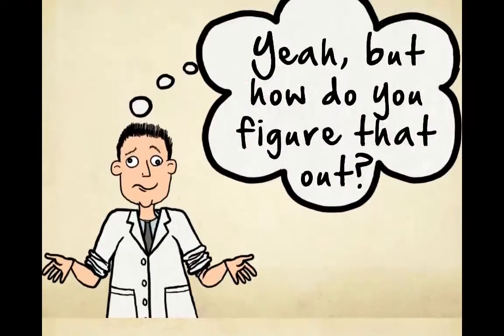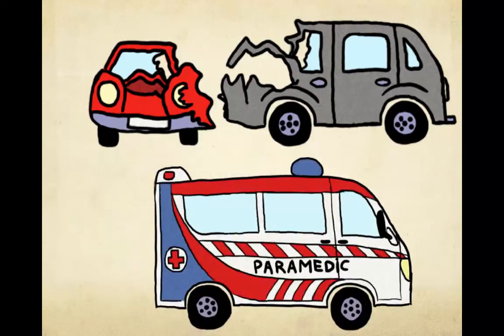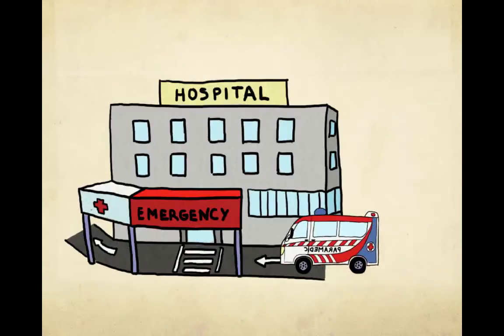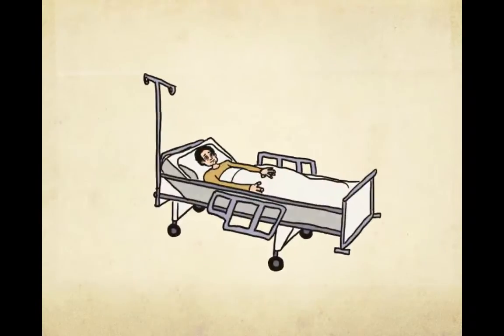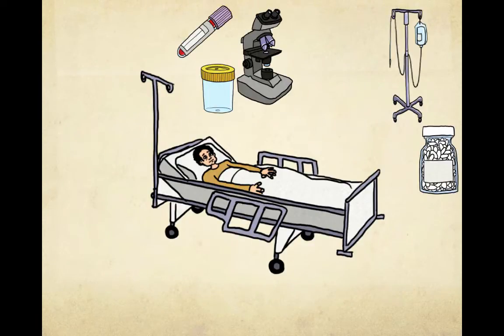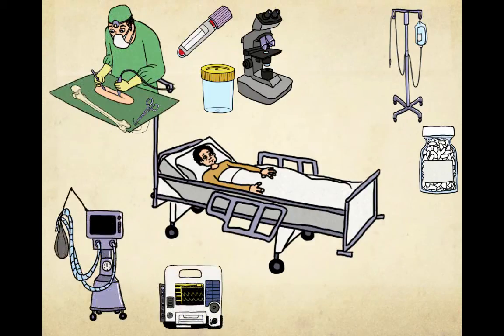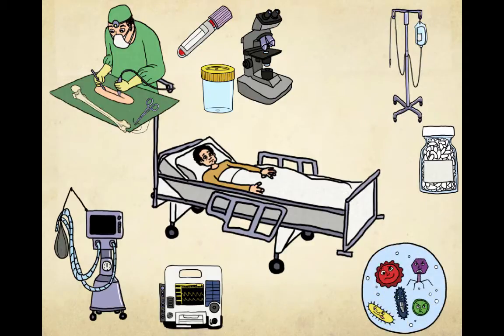That sounds complicated — how do you figure that out? Well, let me give you an example. Let's say a patient is brought to hospital with a certain diagnosis. During that stay he might need certain tests, receive different types of treatment, need an operation or procedure, need added care like ventilation or monitoring, or he might develop an infection while in hospital. All of these things add to the complexity of the admission.